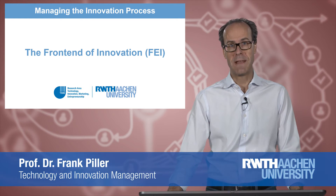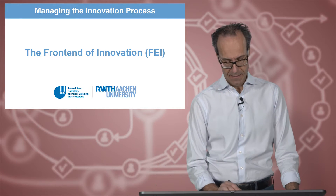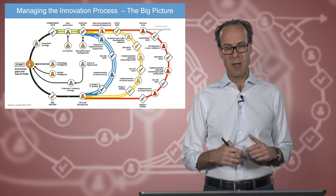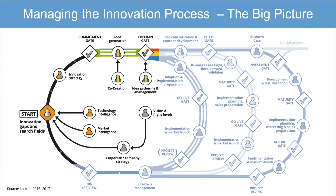Let's start with the first stage of the innovation process, the so-called front end of innovation, or FEI. In our big picture, we are really now in the first activities. The front end is also called the process stages before there actually is a project — it's about recognizing in a company that we really have to start an innovation project, recognizing trends and opportunities. It starts to identify innovation gaps in search fields.